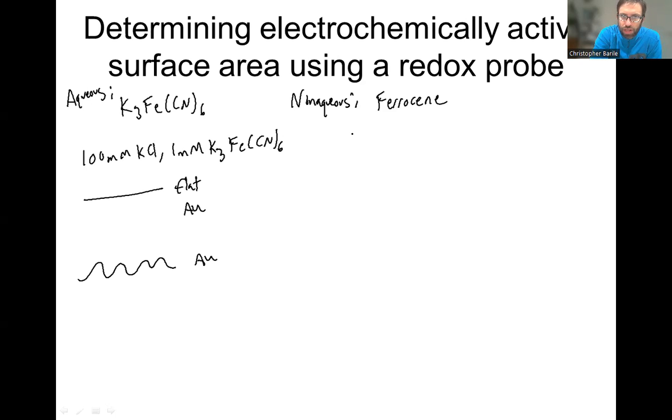In non-aqueous, you're probably going to have to use something that's soluble. So if you're in, I don't know, dichloromethane, you might want to use 100 millimolar tetrabutylammonium fluoride and 1 millimolar ferrocene. So something analogous, but just with soluble things. 100 millimolar is your background supporting electrolyte. You're going to do the same experiment either way. This is your solution that you're going to use for both of these experiments.